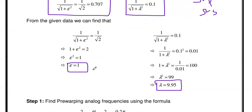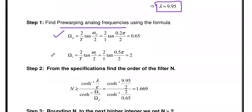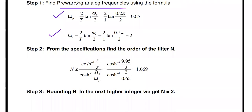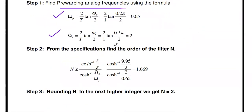Epsilon and lambda are also needed to find the order of the filter. The first step is to find the pre-warped analog frequencies. The analog frequencies Ωp and Ωs are found from the given digital frequencies ωp and ωs. The formula for pre-warped analog frequency is (2/T) × tan(ωp/2). Here T is one second and ωp = 0.2π, so substituting gives Ωp = 0.65.